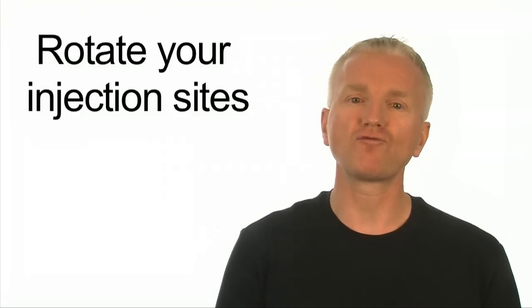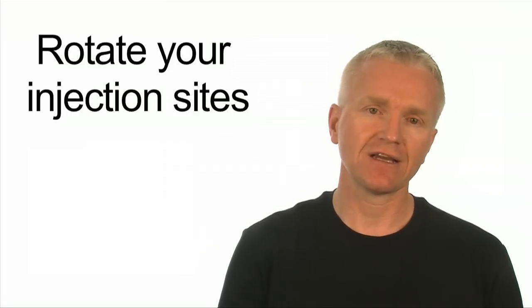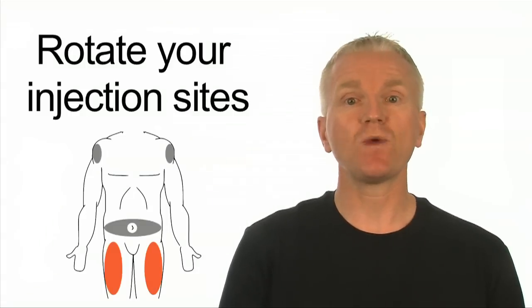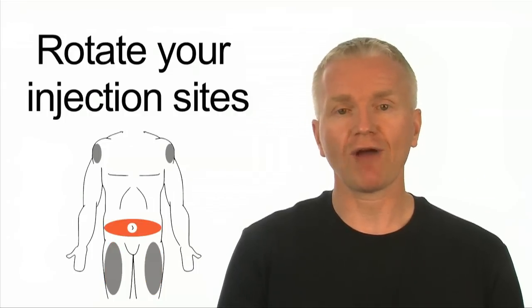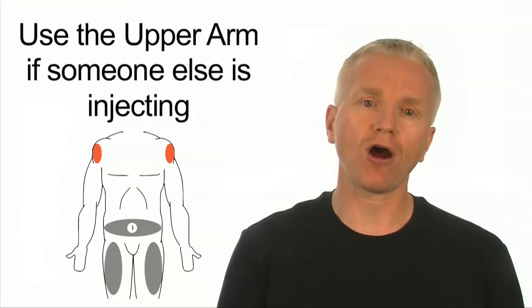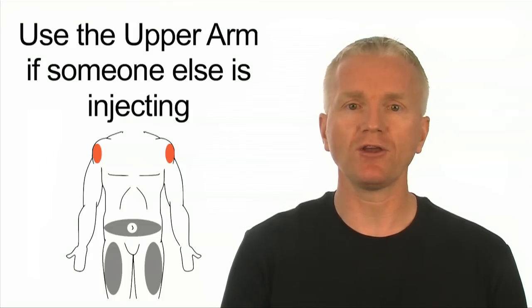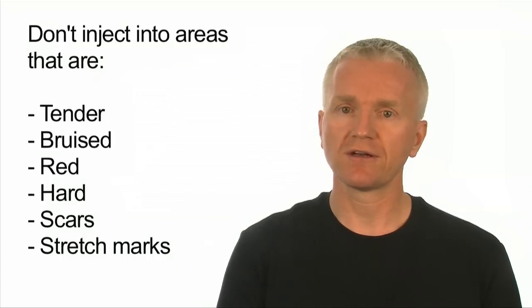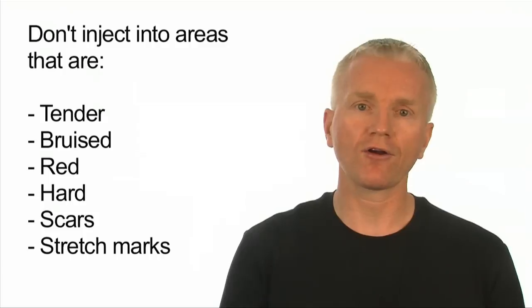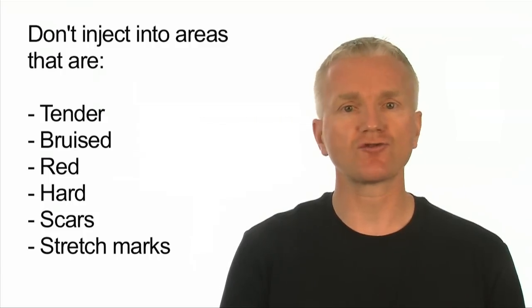It's a good idea to rotate your injection sites. For example, this week you might place the injection into your thigh, and next week into your abdomen. You can also use the upper arms if someone else is helping you with the injection. If you're injecting into your abdomen, stay away from the two inches around your belly button. Don't inject into an area that is tender, bruised, red, hard, or one that has scars or stretch marks.